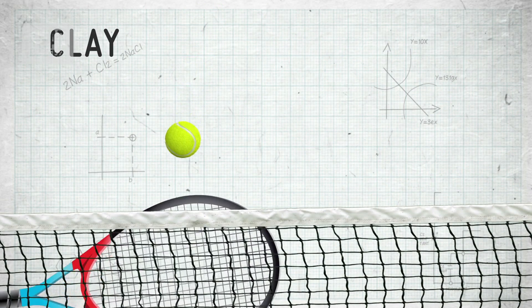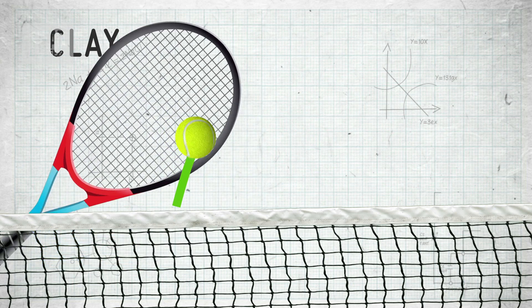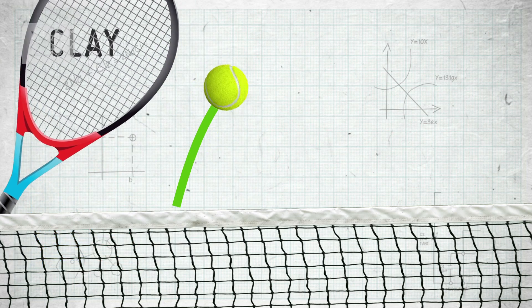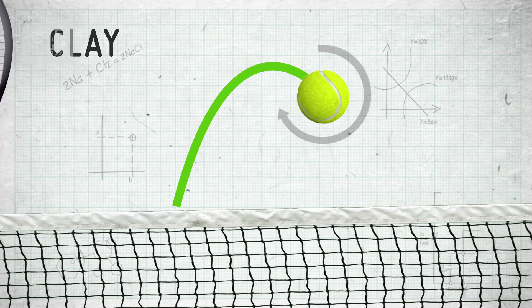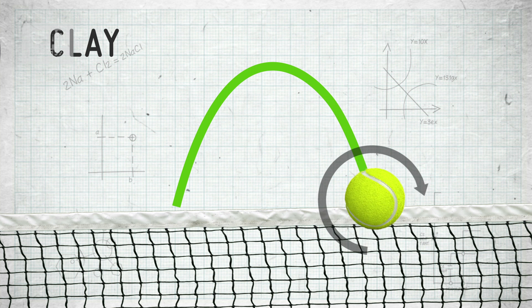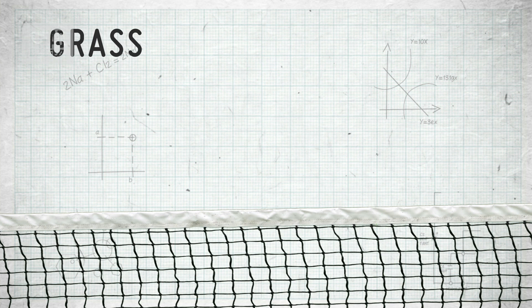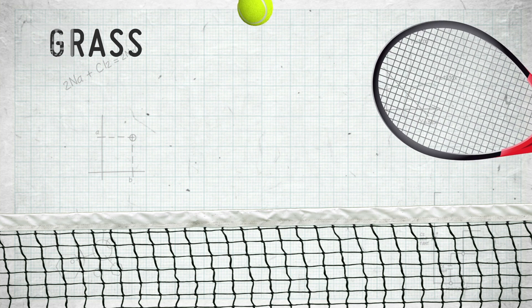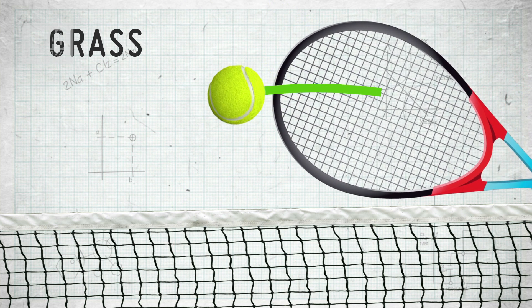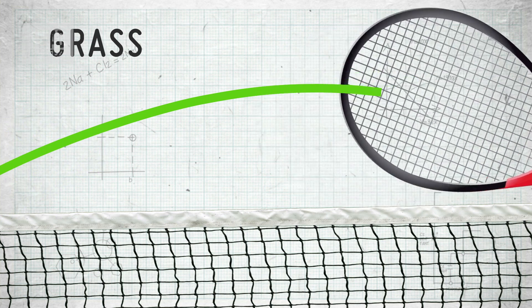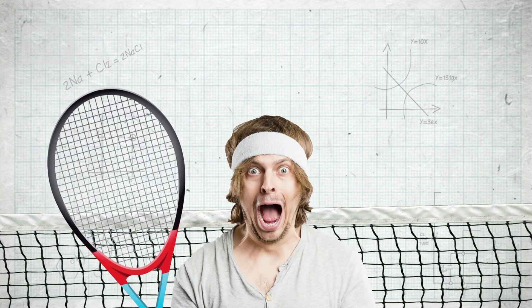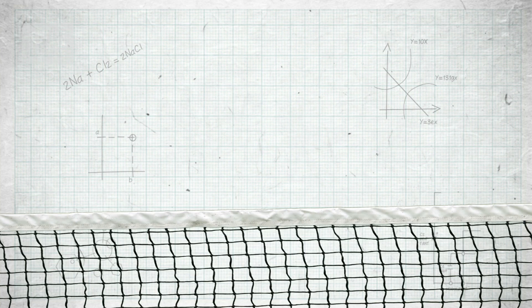Another difference is that clay court specialists often have quite extreme grips to generate more topspin. Topspin controls the ball and means it can go higher over the net and still dip back down into the court even if hit really hard. Whereas on grass, players tend to hit the ball a bit flatter because although they'll have a lower margin for error, they're more likely to hit winners because grass is a faster surface.